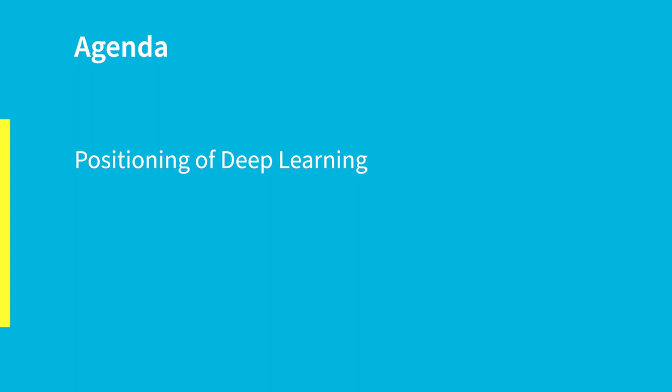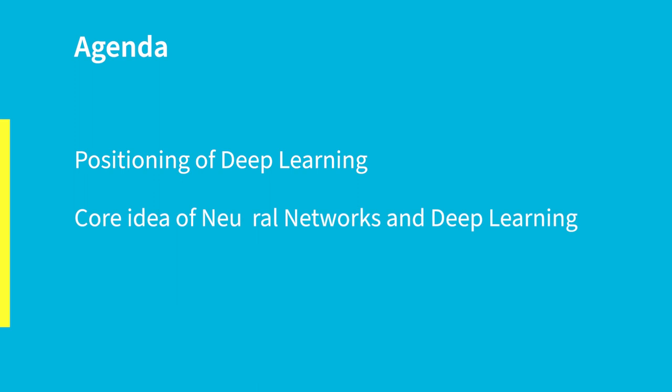Hello, welcome to our second talk on artificial intelligence. Today we will talk on neural networks and deep learning. The agenda of today is first the positioning of deep learning, also in relation with machine learning. Then we will have a look at the core idea of neural networks and deep learning, and we will investigate how neural networks and deep learning really learn — how they do this acquisition of knowledge.